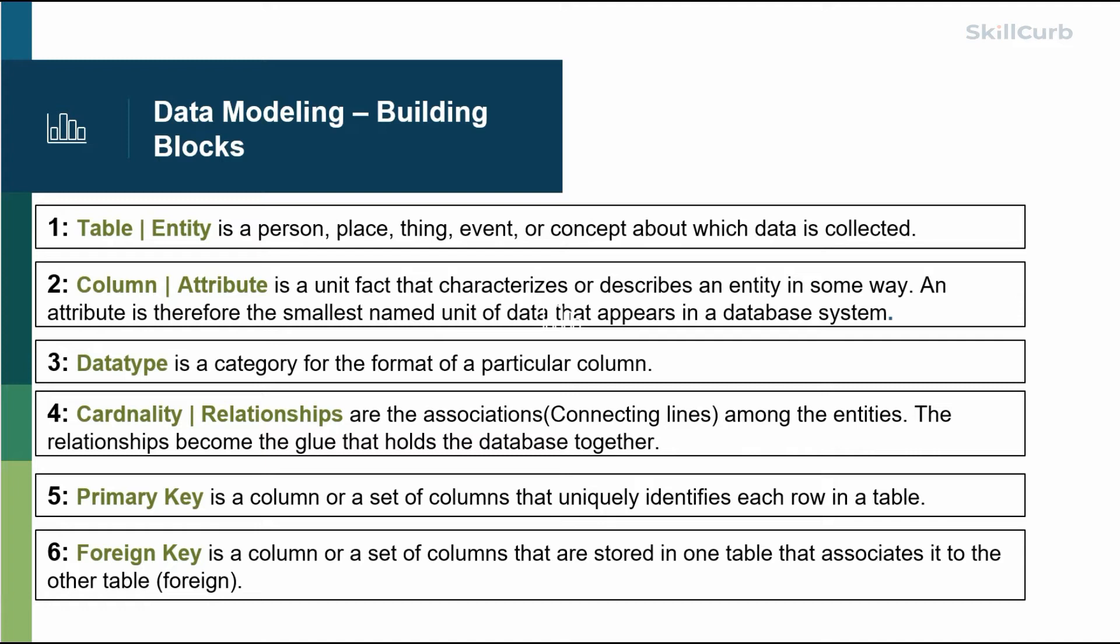those columns. Fourth is cardinality - relationship is what defines how two tables or entities are linked with each other. It's more of a descriptive way of saying how they are related with each other. We're going to go into detail about the different types of cardinalities and relationships that are present. Fifth is the primary